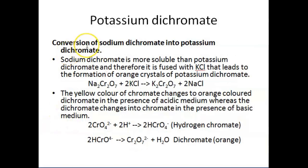The third step is the conversion of sodium dichromate into potassium dichromate. Since sodium dichromate is more soluble than potassium dichromate, it is fused with potassium chloride, leading to the formation of orange crystals of potassium dichromate. The reaction is: Na2Cr2O7 + 2KCl → K2Cr2O7 + 2NaCl. The yellow color of chromate changes to orange dichromate in acidic medium, whereas dichromate changes into chromate in basic medium.